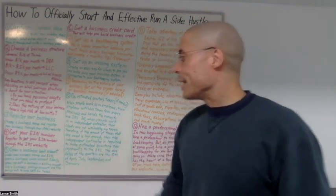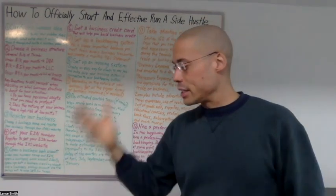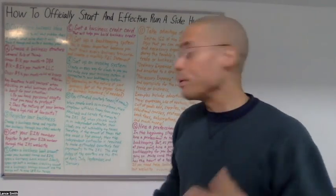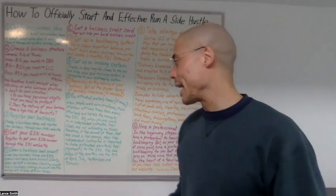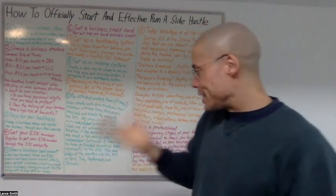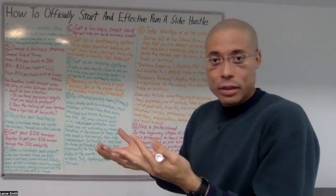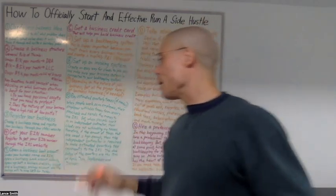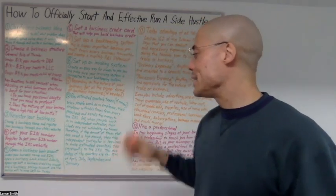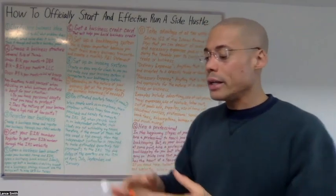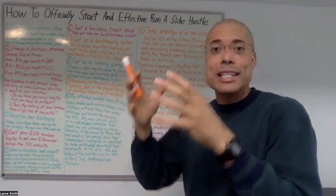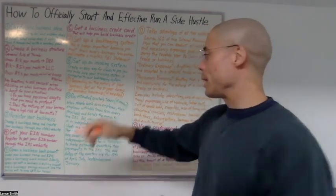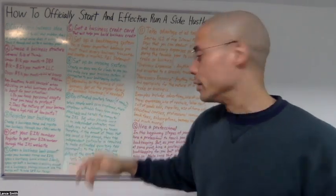Number five, now that you have your business registered and you have your EIN number, you're ready to open up business bank accounts under your business name and EIN number. Ideally, open up both a business checking account and a business savings account because you want to use the business savings account to save for taxes.